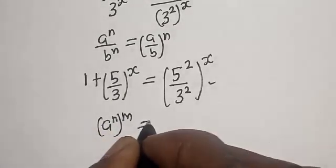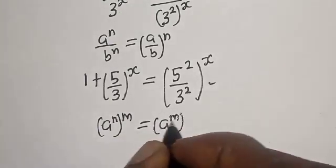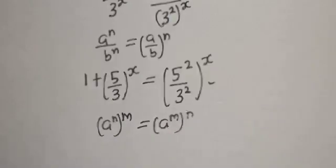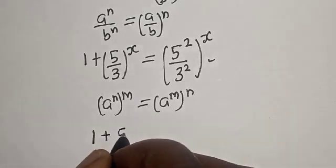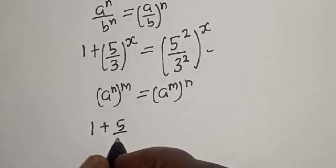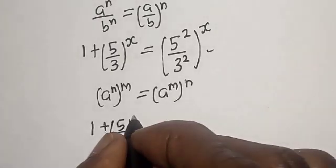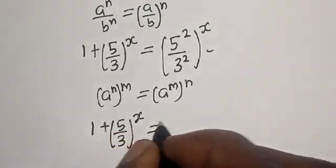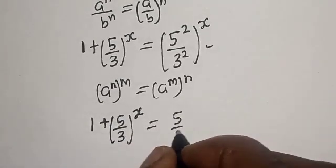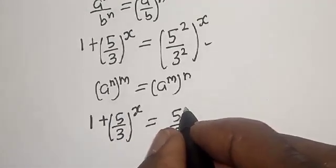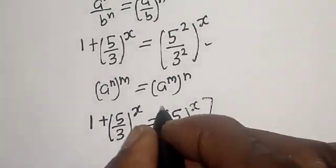Using the exponential rule that a^(mn) equals (a^m)^n, this becomes: 1 plus (5/3)^s is equal to (5/3)^s all squared, that is (5/3)^(2s).